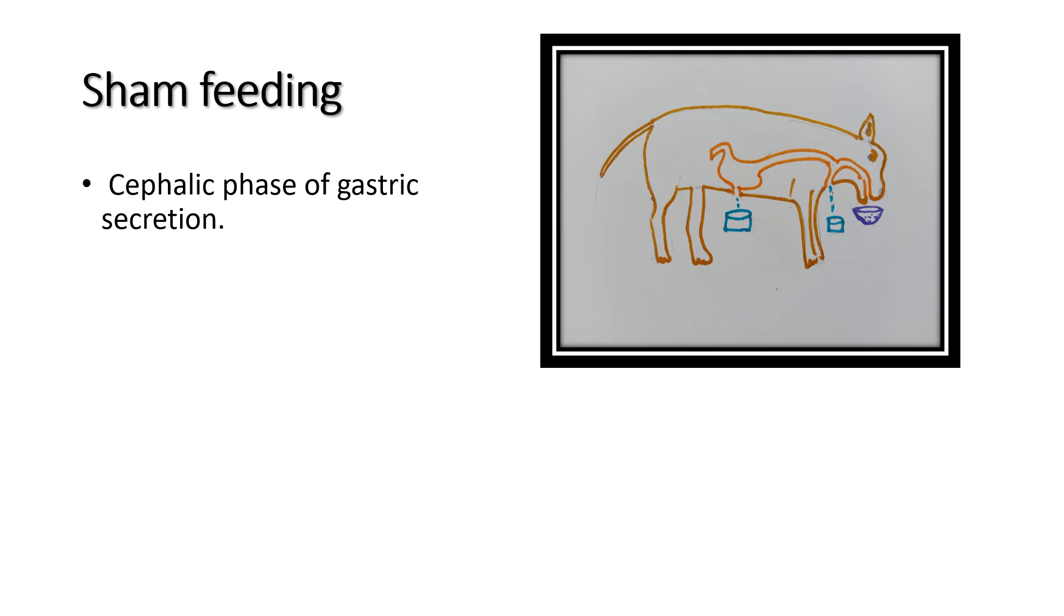This is demonstrated in an experimental dog. The esophagus of the dog is exposed and an incision is made to blind and cut it in the middle of the neck. So when the food enters into the mouth, it comes through the middle of the neck and does not reach the stomach.